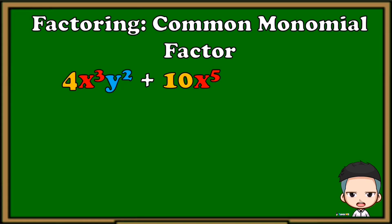Another one: 4x cubed y squared plus 10x raised to 5. Get the GCF of the numerical coefficients and the GCF of the variables. As you can see, the second term doesn't have variable y, so our common monomial factor is 2x cubed. Divide each term by our common monomial factor: 4 divided by 2 is 2, x cubed divided by x cubed is 1 — just cancel those two x cubes.